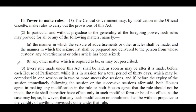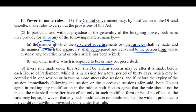Section No. 10: Power to Make Rules. The Central Government may by notification in the official Gazette make rules to carry out the provisions of this Act. In particular, such rules may provide for: (a) the manner in which seizure of the advertisement or other article shall be made, and the manner in which the seizure list shall be prepared and delivered to the person from whose custody any advertisement or other articles have been seized; (b) any other matter which is required to be or may be prescribed.